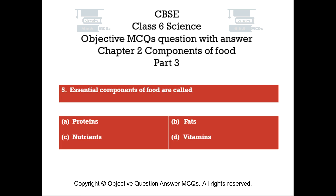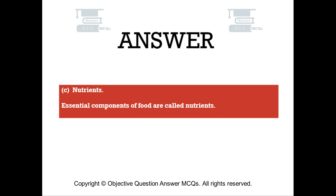Question number 5: Essential components of food are called. Option A: Proteins. Option B: Fats. Option C: Nutrients. Option D: Vitamins. The right answer is Option C — Nutrients. Essential components of food are called nutrients.